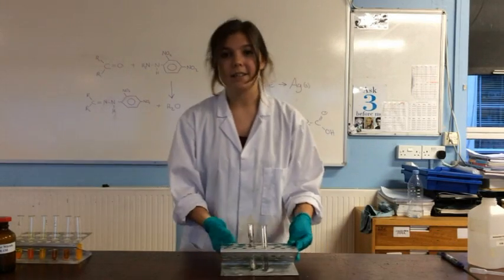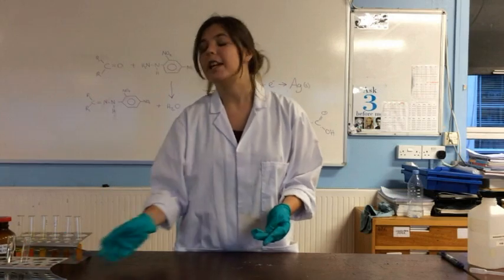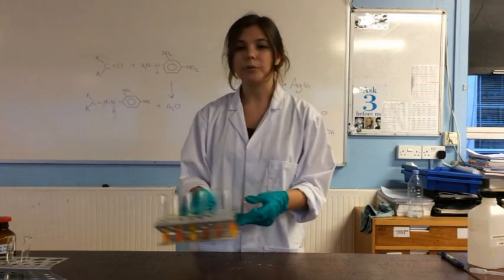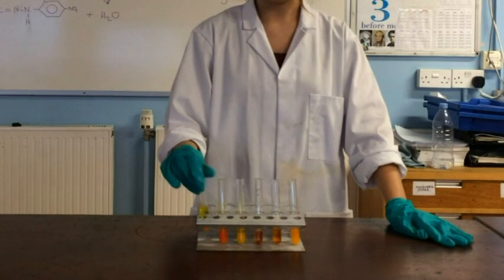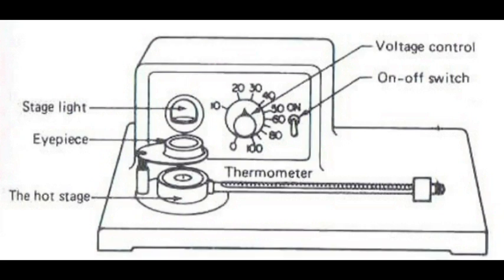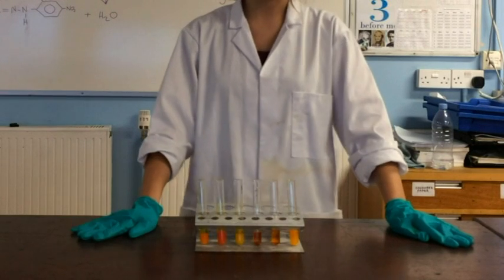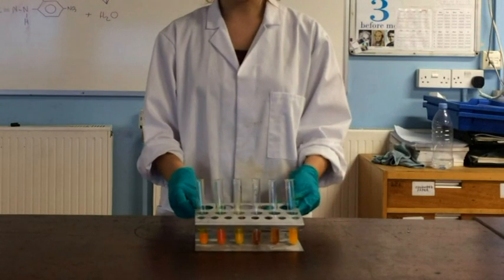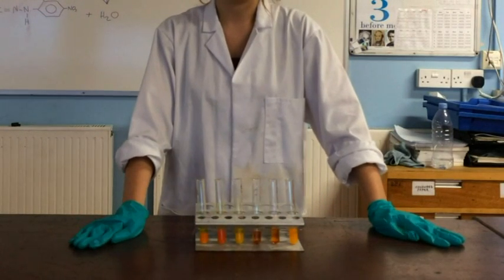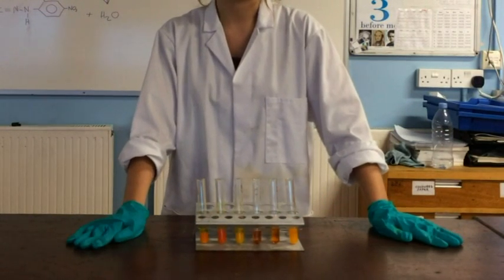So if you want to know exactly which aldehyde or which ketone you have, a good way to do that would be to test the melting point of the derivatives from our Brady's test. Then we can use an imaginatively named Fisher-Johns melting point apparatus to test the melting point of the derivative which can be found on data tables. We're not testing the substances themselves as their melting points are often too similar to be of much definitive use, unlike the melting points of their derivatives.